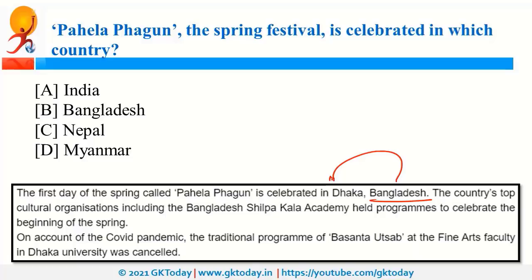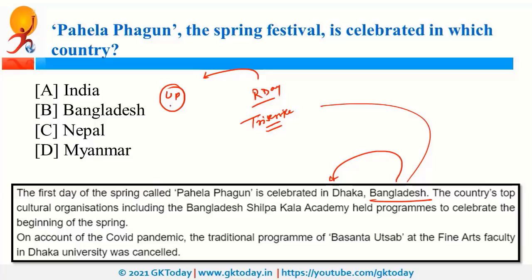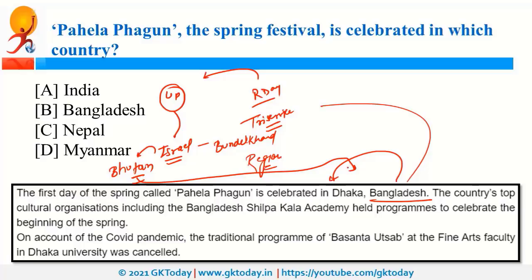On the occasion of Republic Day, the tri-service contingent of Bangladesh participated in India's Republic Day ceremony. The tableau of Uttar Pradesh won the award for best tableau in the states category. UP also collaborated with Israel for water conservation in the Bundelkhand region. Israel normalized ties with Bhutan, and Bangladesh signed its first Preferential Trade Agreement (PTA) with Bhutan — Bhutan being the first country to recognize Bangladesh.